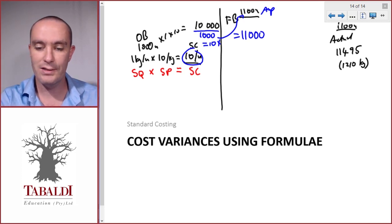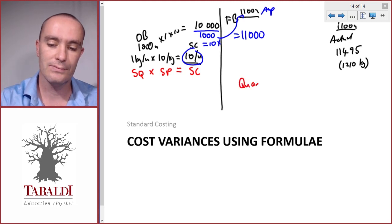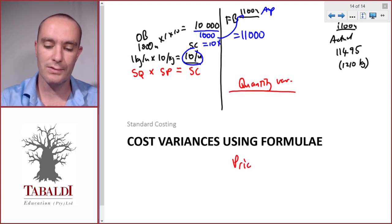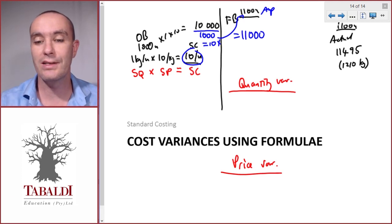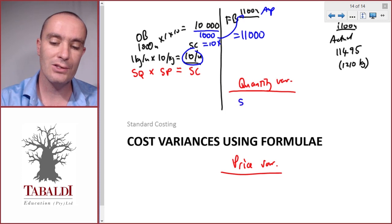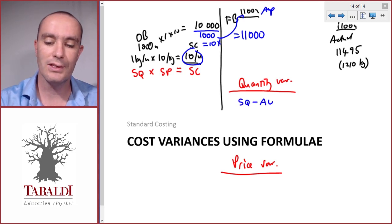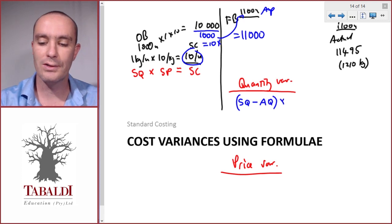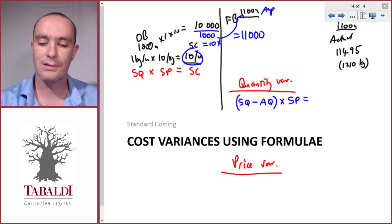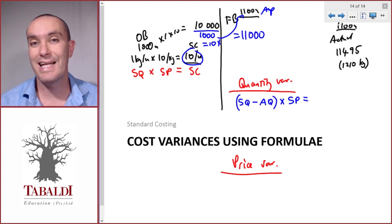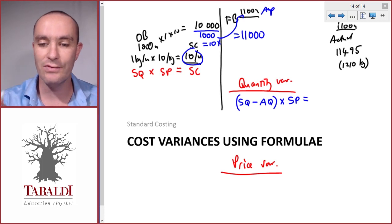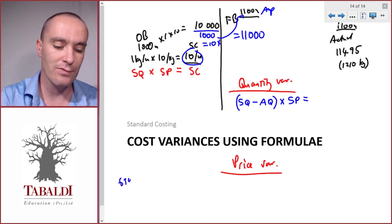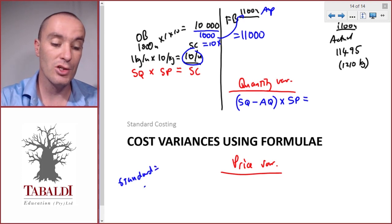Now let's use the formulas to calculate the quantity variance and the price variance. For the quantity variance, the formula is: standard quantity minus actual quantity, multiplied by the standard price. Standard quantity — remember, the word 'standard' means 'should have.'